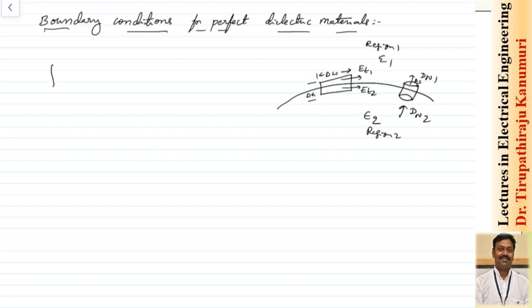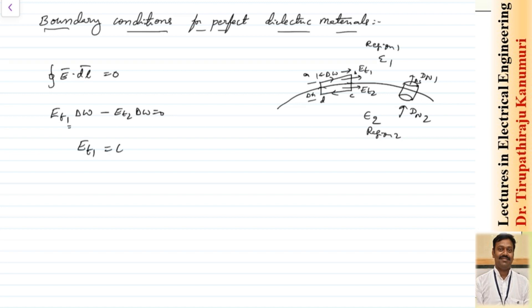We know the closed line integral of E dot dl is equal to 0. As delta h tends to 0, the sides become 0, so we only take the top and bottom layers. This becomes Et1 multiplied by delta w minus Et2 multiplied by delta w equals 0. Moving along the loop a to b c to d — a to b is in the same direction as the tangential component (plus) and c to d is in the opposite direction. Since delta w is the same, this gives Et1 equal to Et2.